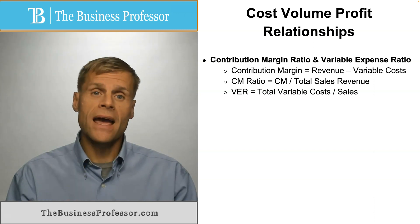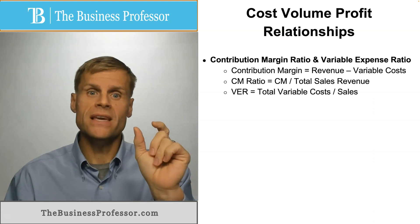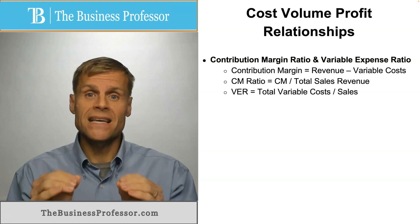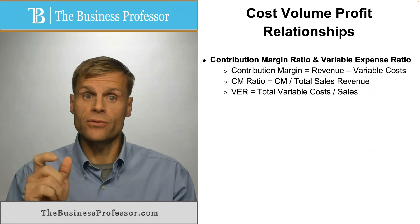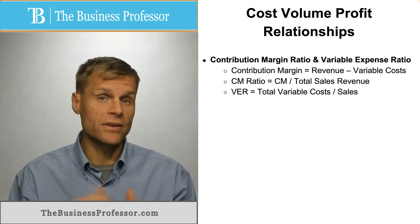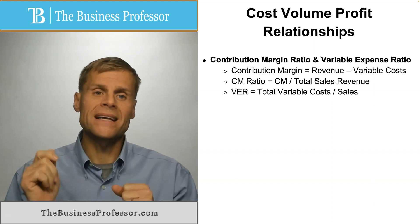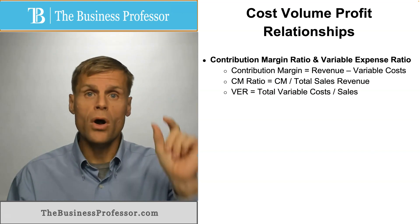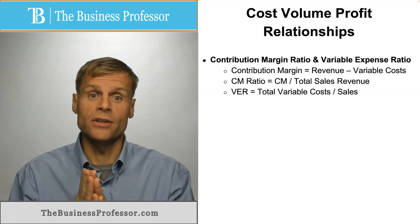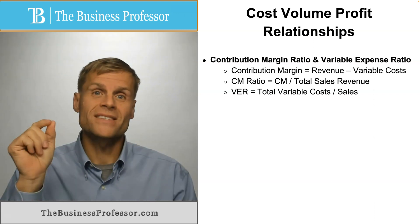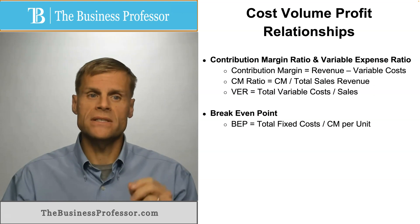From there, you can get a contribution margin ratio, which is your contribution margin divided by your total sales revenue. This will be useful as a metric for determining a couple of other things in the breakeven analysis. Your variable expense ratio is your total variable cost divided by total sales — the costs that were subtracted from revenue as part of contribution margin.